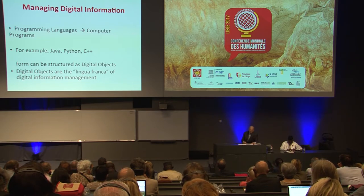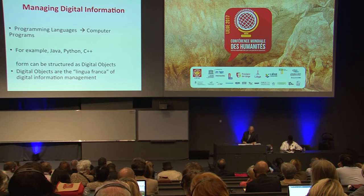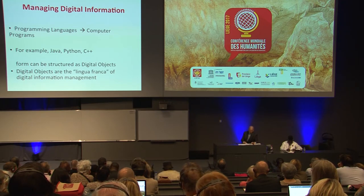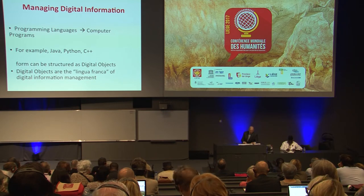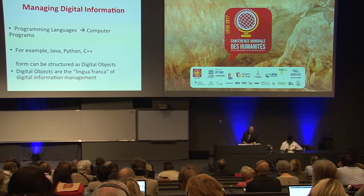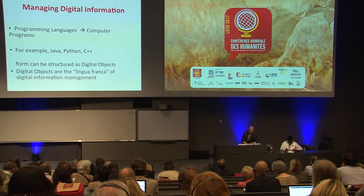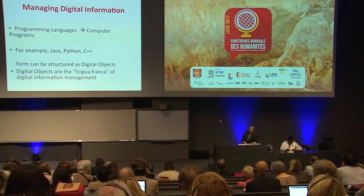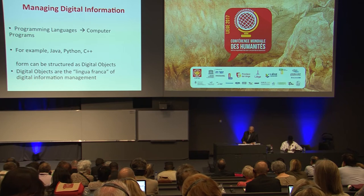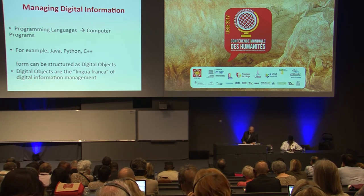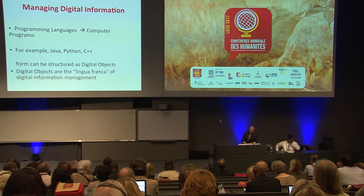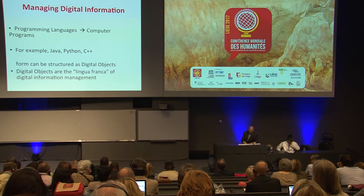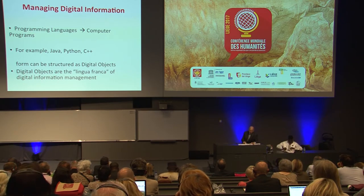An essential attribute of this architecture is the use of unique persistent identifiers to access information in the form of digital objects — for brevity I sometimes refer to digital objects as DOs. A programming language is the means by which a computer program may be expressed. However, for such programs to be accessed from storage — including data and other information that may be incorporated within a computer program — and then processed, this information needs to be represented in digital form and properly structured. In general terms, this is what we refer to as a digital object.